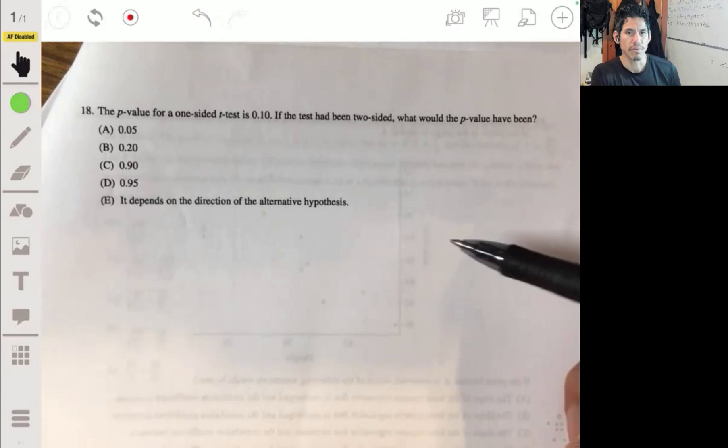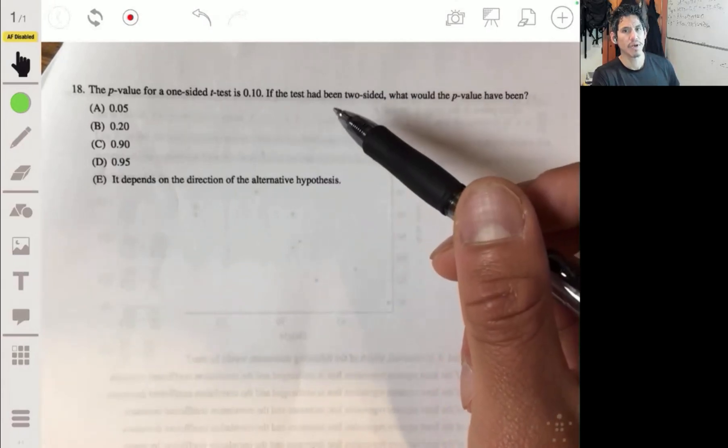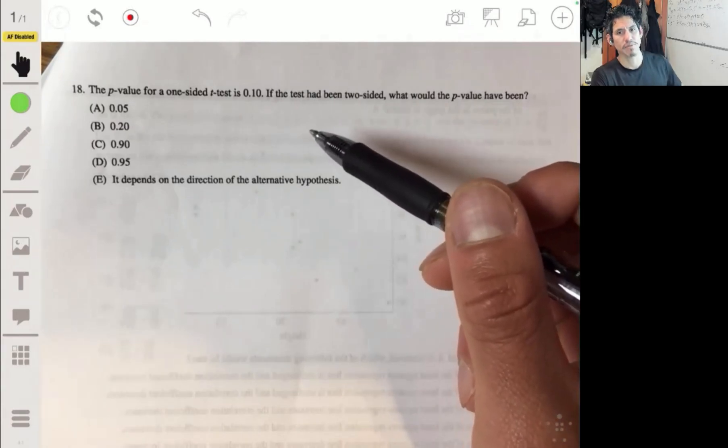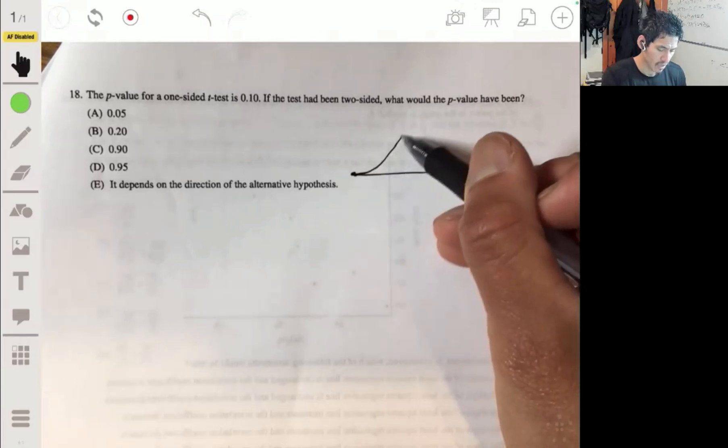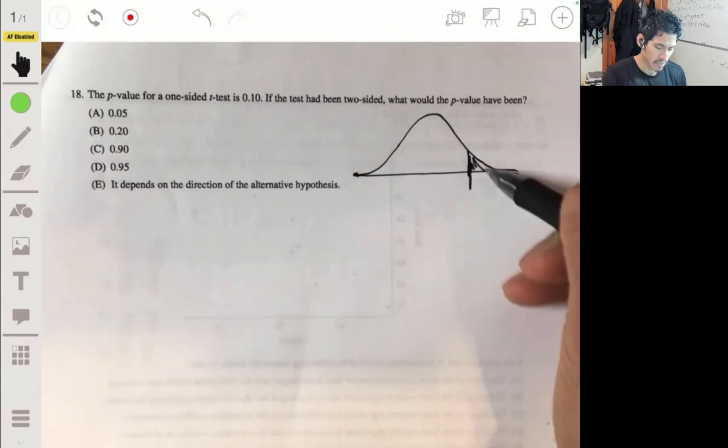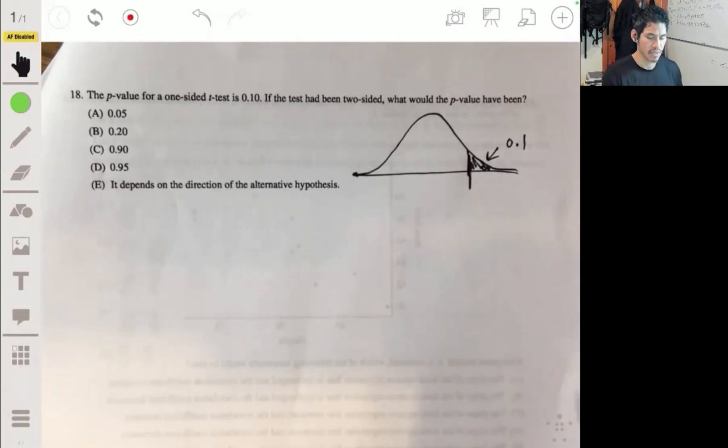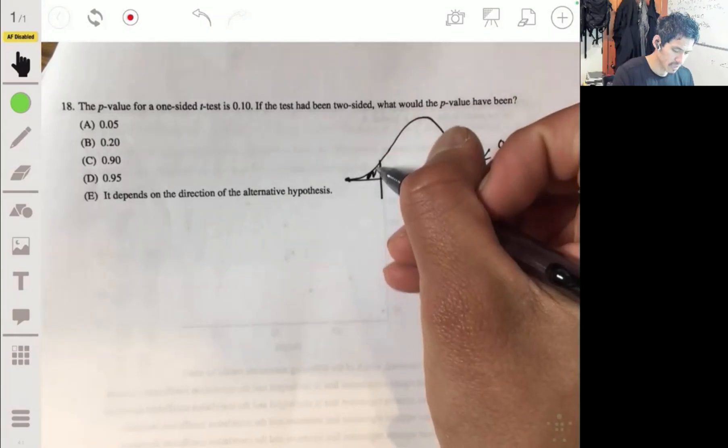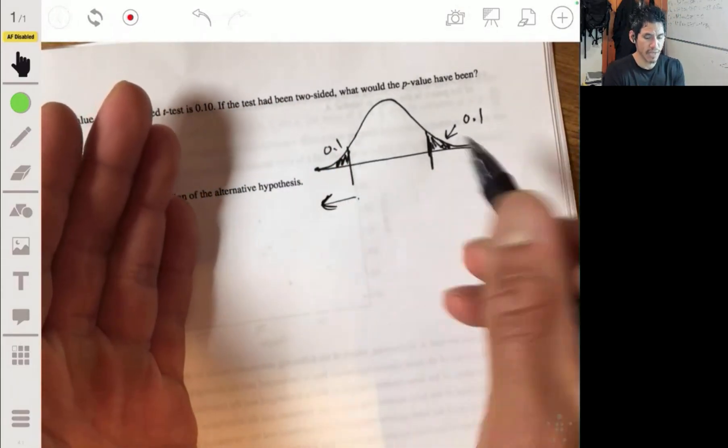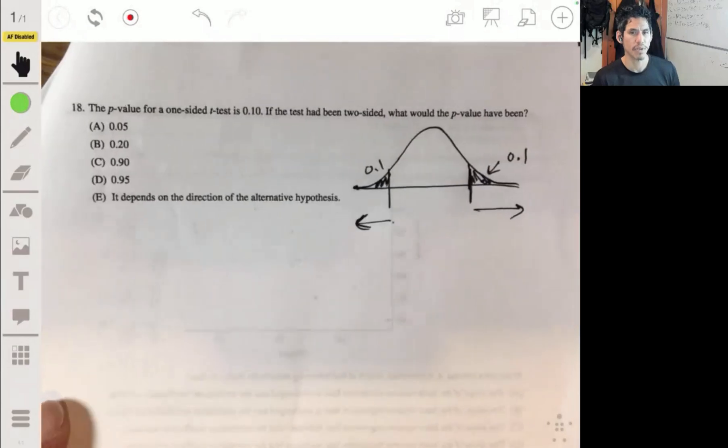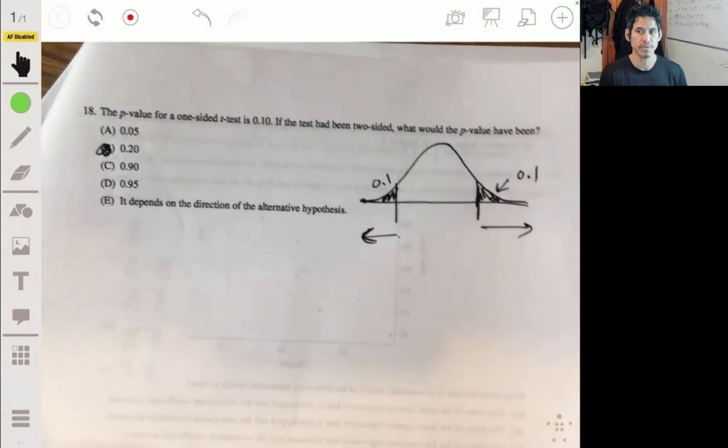So not really much work on there. Alright. Problem 18. This is a fun one. The p-value for a one-sided t-test is 0.1. If the test had been two-sided, what would the p-value have been? Okay, so one side, we're looking at this probability or this area being 0.1, right? If it's going to be two-sided, then we're also going to look at this side, the other 0.1. We're looking at whether you remember if it falls extreme to the left or extreme to the right, whatever values. So it's just going to be double that. You have 20% chance or 0.2 is your p-value. So the answer is B.